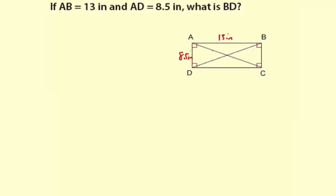Now we have a rectangle situation here, which means each diagonal forms a right triangle. So to find BD we're going to have to use the Pythagorean theorem.